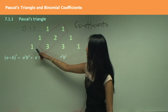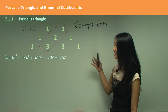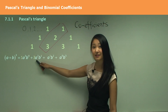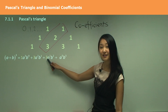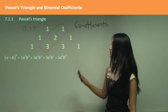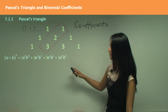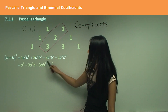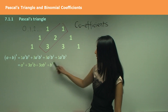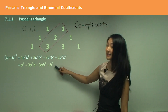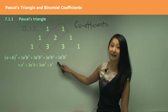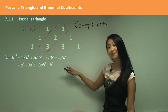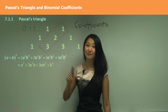Now let's put in our coefficients from Pascal's Triangle: 1 goes to the first term, 3 to the second term, 3 to the third term, 1 to the fourth term. Then simplify: that's a cubed, 3a squared b, 3ab squared, and b to the power of 3. Once fully simplified, that is the expansion of a plus b to the power of 3.